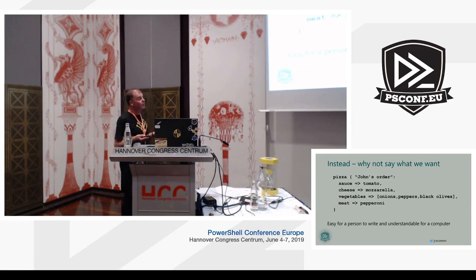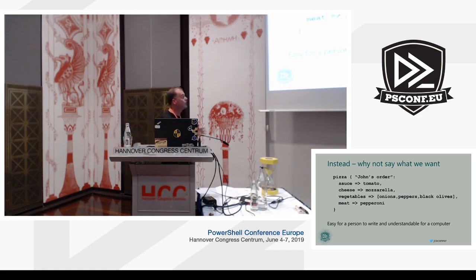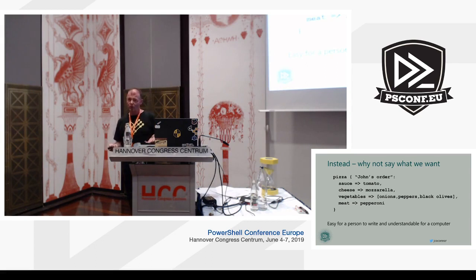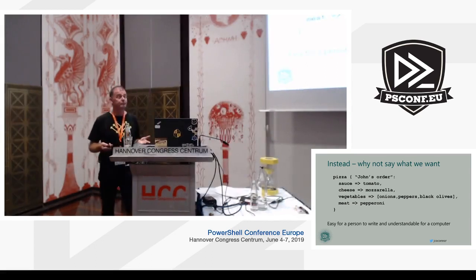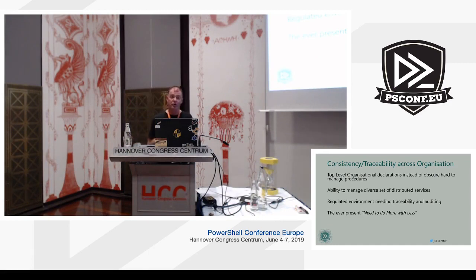This is an example that crosses between both Puppet and DSC where you declare: yes, this is my order — I want tomato sauce, I want mozzarella cheese, and I want these vegetables. This is much easier for a person to write and understand, and it can also be made understandable to a computer. This is really switching from a procedural model to a declarative model.